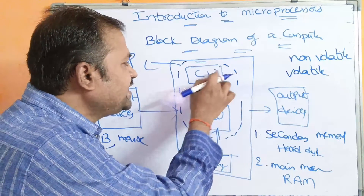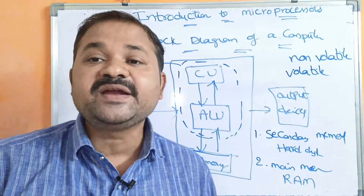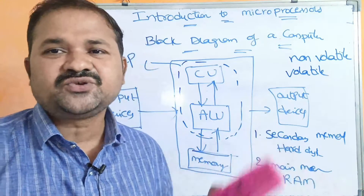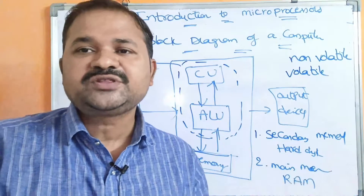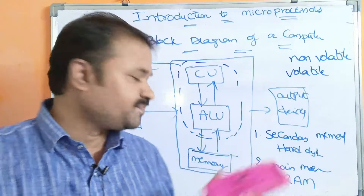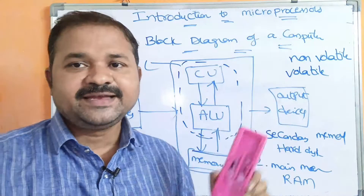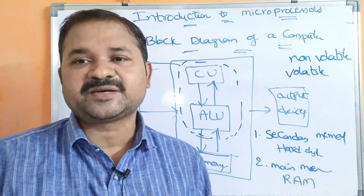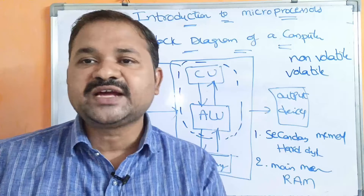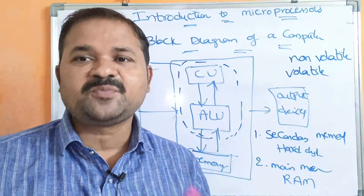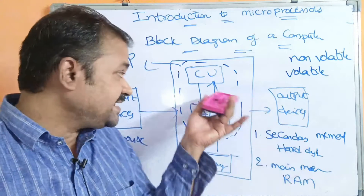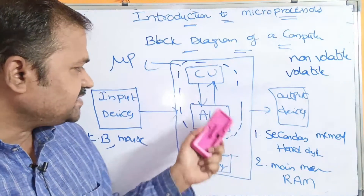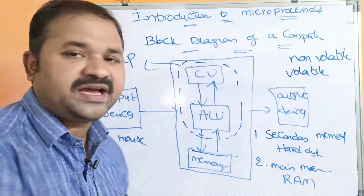Processor is a combination of ALU and control unit. ALU — arithmetic logic unit — performs all arithmetic operations, logical operations, and shift operations. Anything in the computer is executed by ALU. Microprocessor is the brain of the computer, and ALU is the brain of the microprocessor. Control unit is mainly useful for decoding instructions, to determine which operation ALU has to perform — whether addition, subtraction, AND, OR, or shift operations. Control unit decodes the instruction and determines which operation is to be performed. So microprocessor is a combination of ALU and control unit.